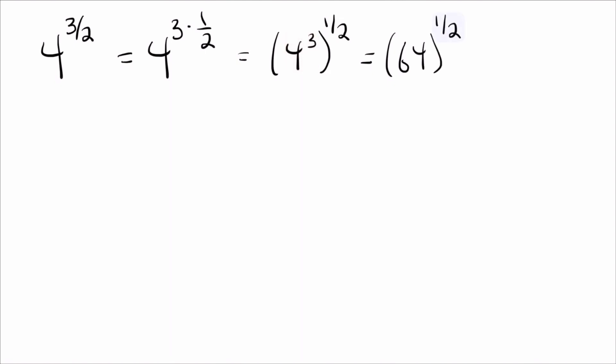And I also have a video about why this 1 half power means square root, but it does. It means square root of 64 here, which is, of course, 8. So there we go. We figured out what 4 to the 3 halves is.